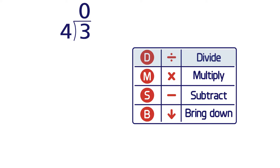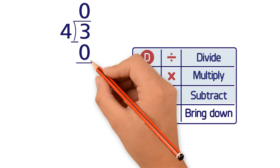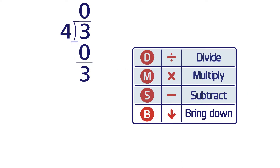Step 2: Multiply. We multiply 4 times 0 to get 0. We write the 0 beneath the 3. Step 3: Subtract. 3 minus 0 equals 3.